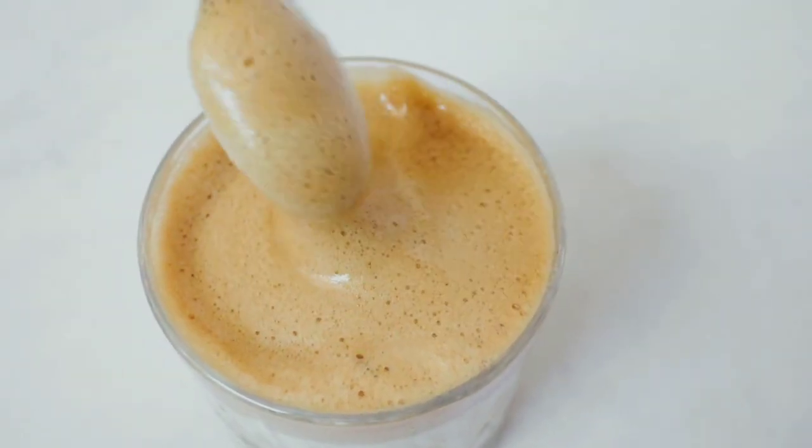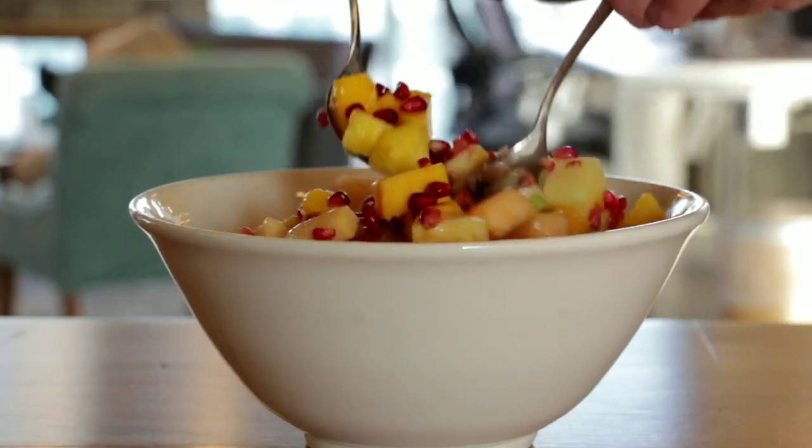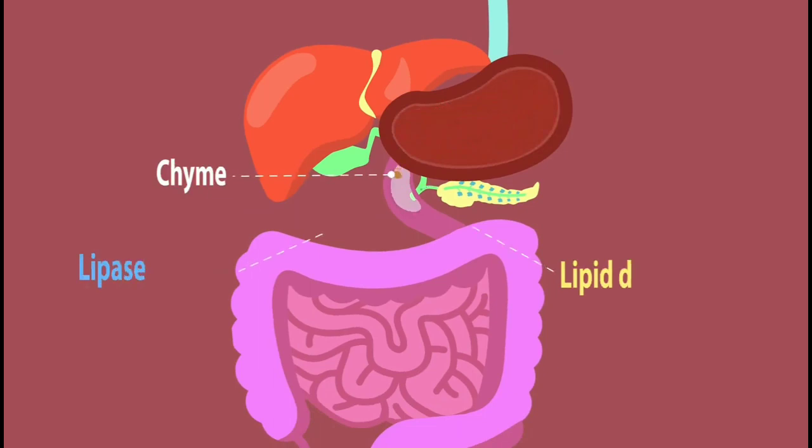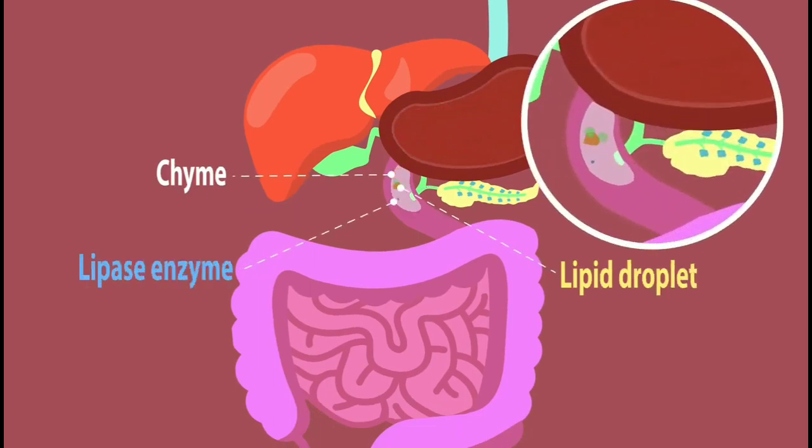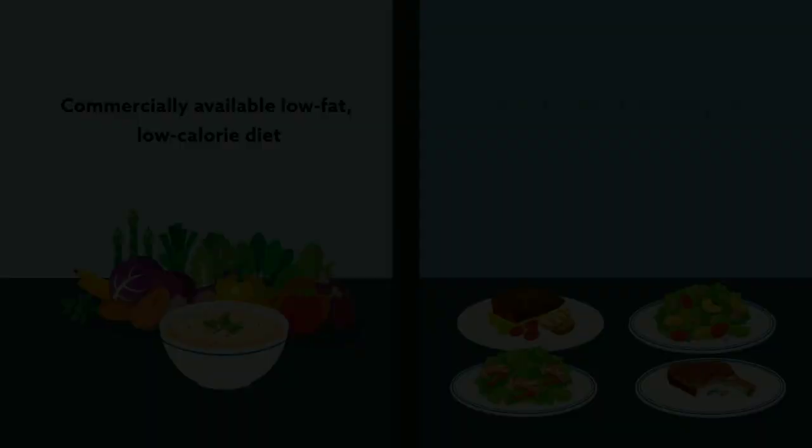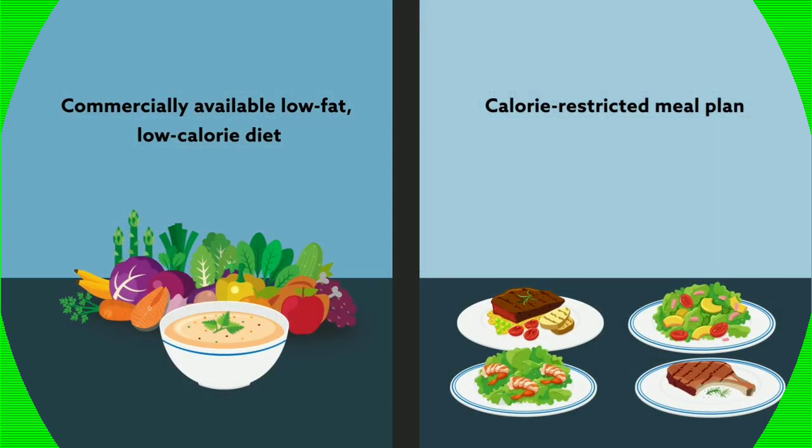Sugar occurs naturally in all foods that contain carbohydrates, such as fruits, vegetables, grains, and dairy. Since your body digests these foods slowly, the sugar in them offers a steady supply of energy to our cells. Consuming whole foods that contain natural sugar is okay.